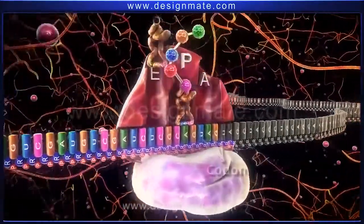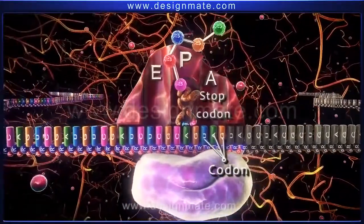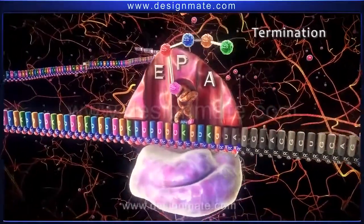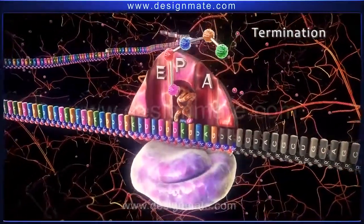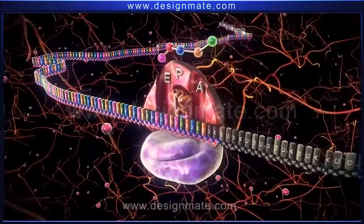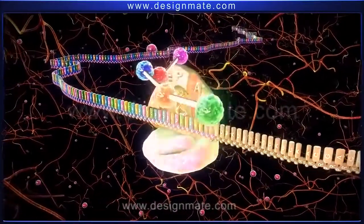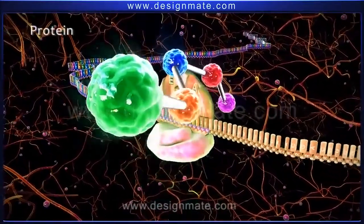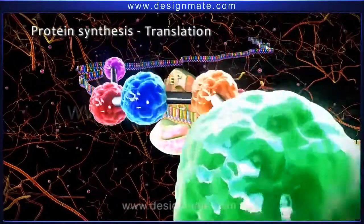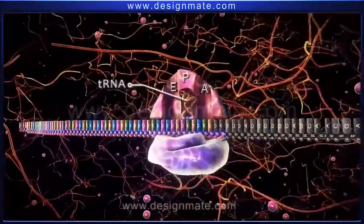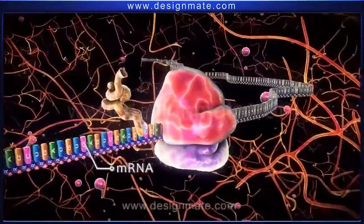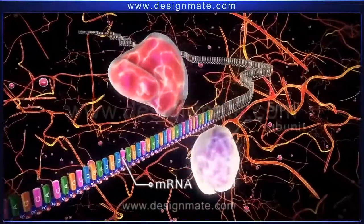Finally, when the UAG codon, or the stop codon, reaches the A site, elongation is terminated. Termination is the last stage of protein synthesis. The chain of amino acid molecules is released from the ribosome. This released amino acid chain is the protein, and this part of protein synthesis is known as translation. Then the tRNA detaches from the mRNA. The ribosome detaches and dissociates into its small and large subunits.